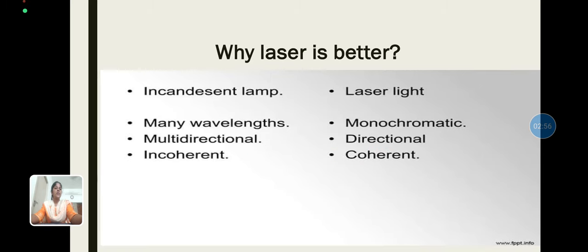Why is laser better than ordinary light? It has special characteristics: highly monochromatic, highly coherent, highly directional, highly intense, and provides a parallel beam of light. In comparison, an incandescent lamp has many wavelengths, is multidirectional, and produces incoherent waveforms.